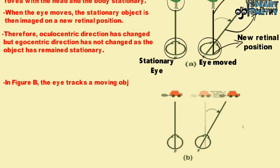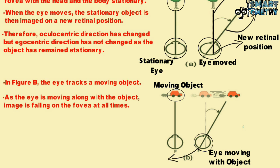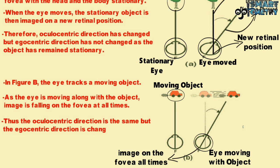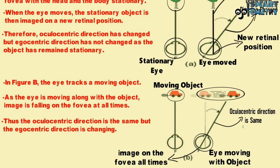In figure B, the eye tracks a moving object. The image of the moving object is focused on the retina at point F. As the eye moves along with the object, the image falls on the fovea at all times. Thus, the oculocentric direction is the same but the egocentric direction is changing. So, the oculocentric direction of the moving object remains the same while the egocentric direction is changing.